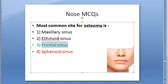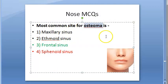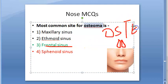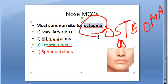Osteoma has also been seen in the ear — specifically in the external ear canal as a benign condition. For paranasal sinuses, frontal sinus is the most common site of osteoma among the four options. Osteoma in ENT appears in both the external ear canal and frontal sinus.